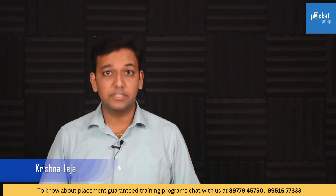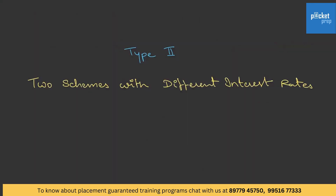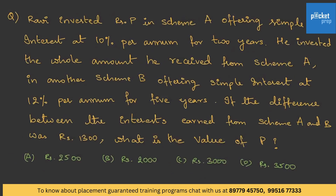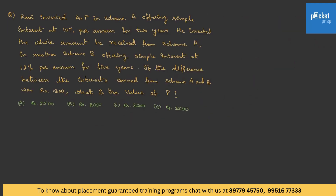That was Type 1. Now let's cover Type 2 — two schemes with different rates of interest. Ravi invested rupees P in Scheme A offering simple interest at 10% per annum for two years. He then invested the whole amount received from Scheme A into Scheme B offering simple interest at 12% per annum for five years. The difference between the interest earned from Schemes A and B was rupees 1300. What is P?